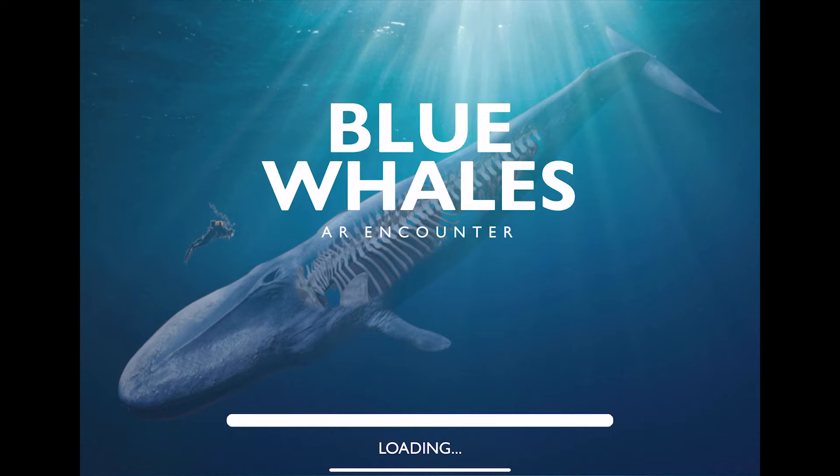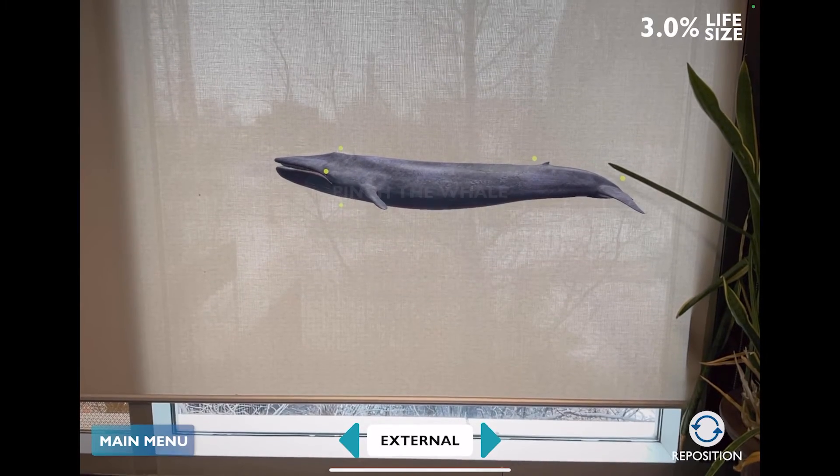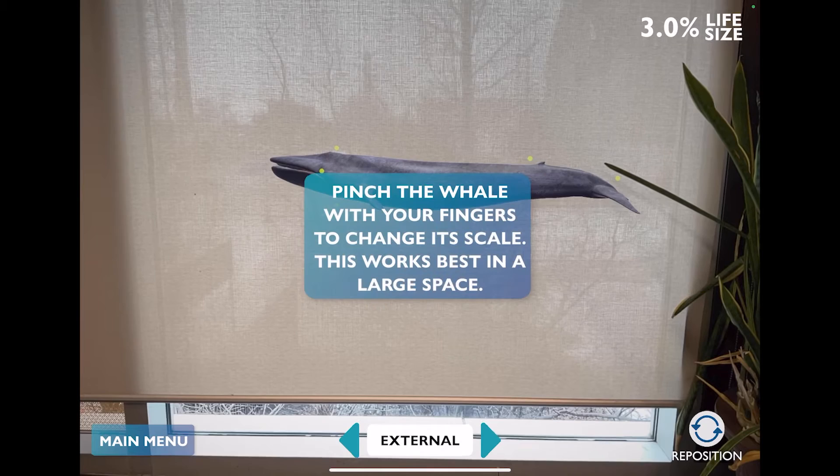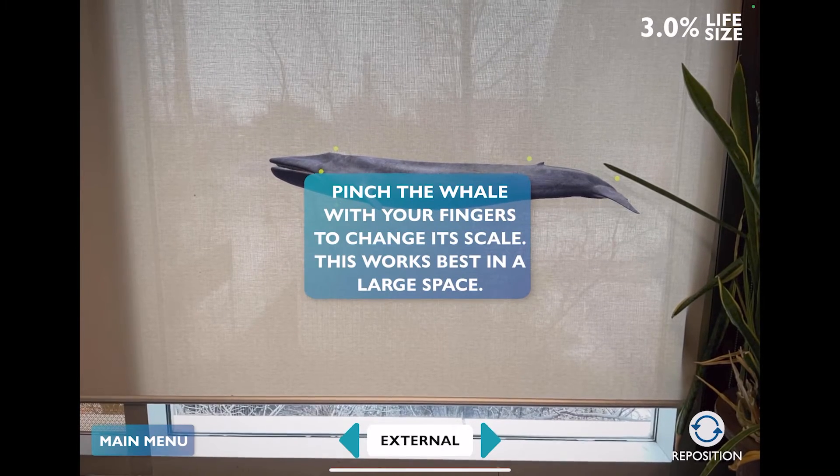Now for this app, a model of a Blue Whale is going to appear in the center of your screen. On the top right-hand side of the screen, you can see how close to life size your current model is. Right now we're at 1% of life size.